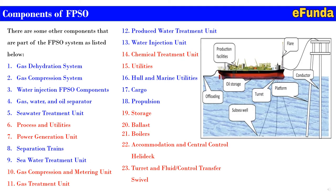1. Gas dehydration. 2. Gas compression system. 3. Water injection FPSO components. 4. Gas, water and test separator — that is oil separator. 5. Seawater treatment plant. 6. Process and utilities. 7. Power generation unit. 8. Separation train. 9. Seawater treatment unit. 10. Gas compression and metering unit. 11. Gas treatment unit. 12. Produced water treatment unit. 13. Water injection unit. 14. Chemical treatment unit. 15. Utilities.